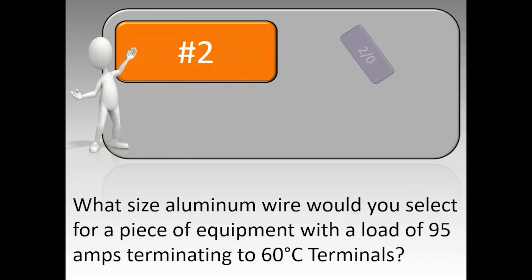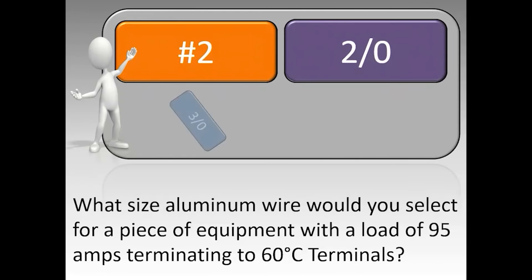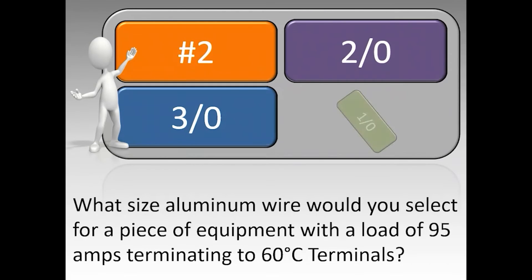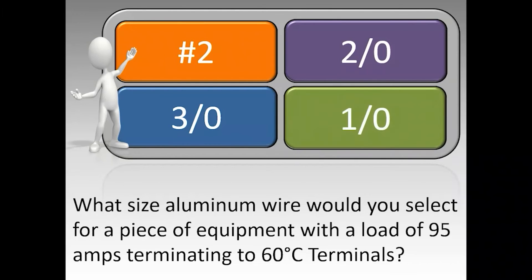What size aluminum wire would you select for a piece of equipment with a load of 95 amps terminating to 60-degrees-C terminals?